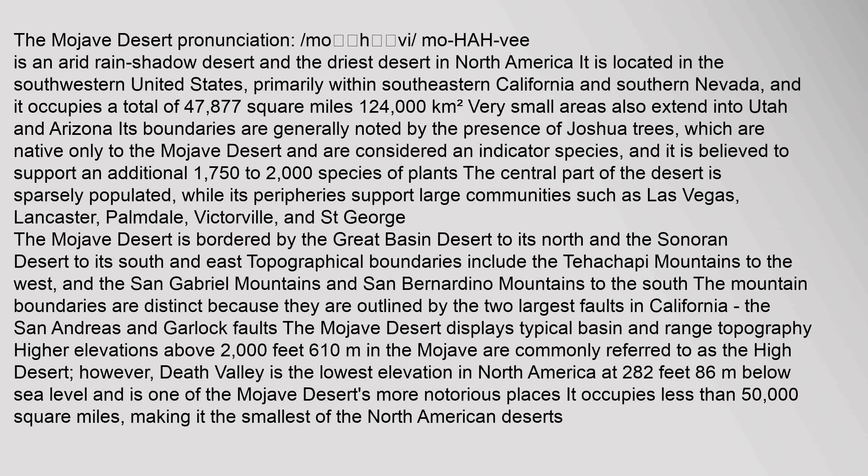The Mojave Desert — pronunciation Mo-Ha-V — is an arid rain shadow desert and the driest desert in North America. It is located in the southwestern United States, primarily within southeastern California and southern Nevada, and it occupies a total of 47,877 square miles (124,000 square kilometers). Very small areas also extend into Utah and Arizona.